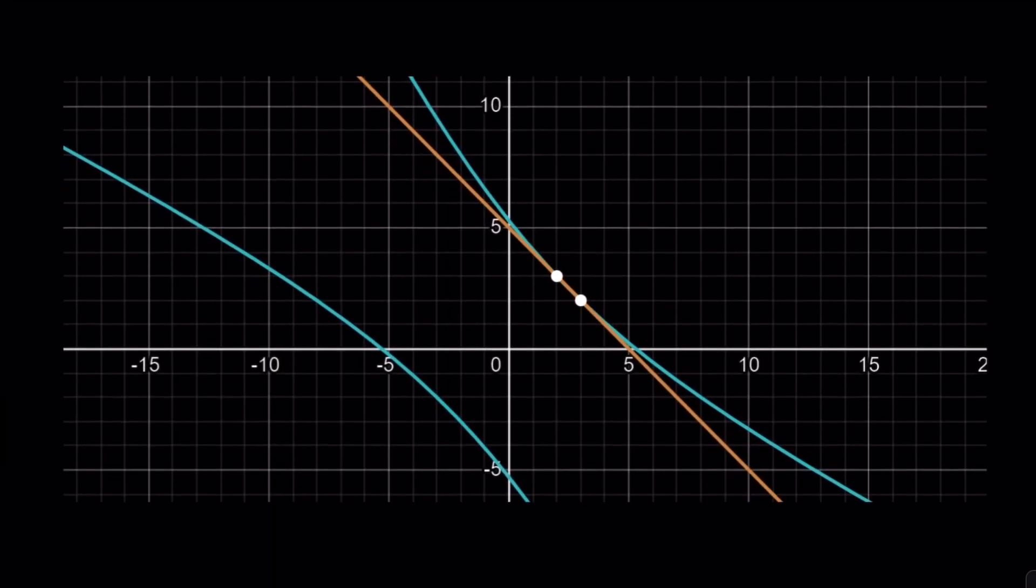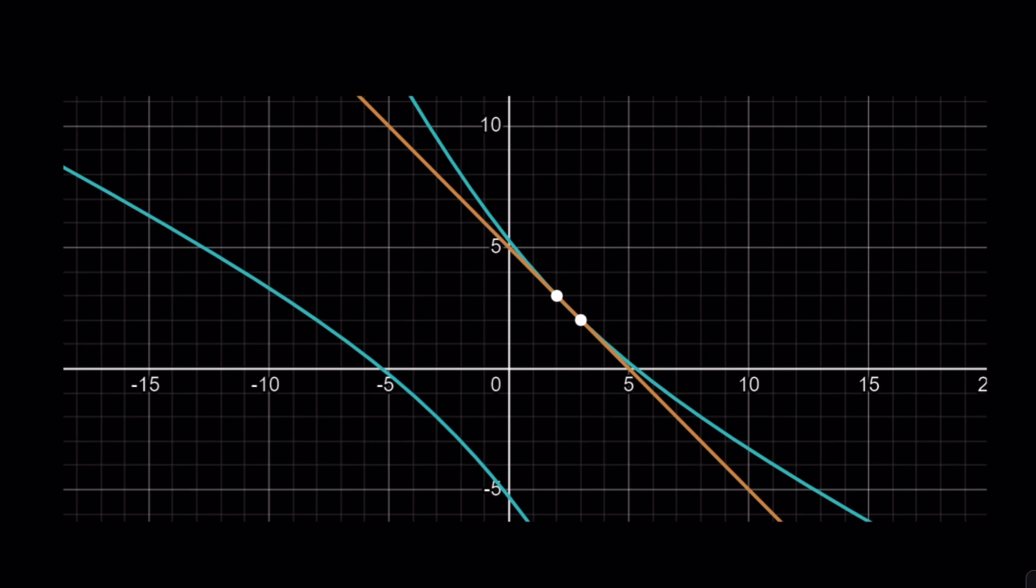Let's take a look at something real cool. The graph of these two relations, or should I say functions, and the intersection points, as you can see, at x equals 2 and x equals 3.